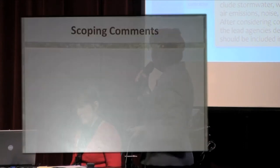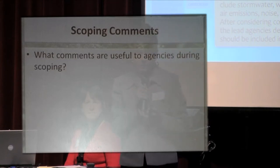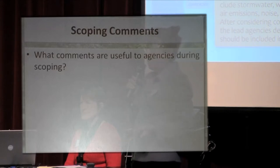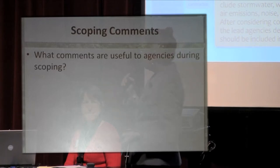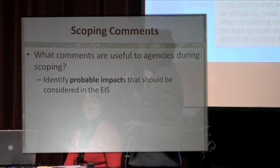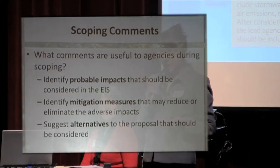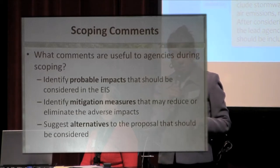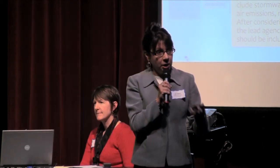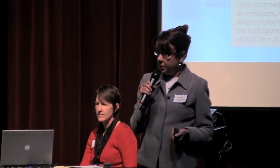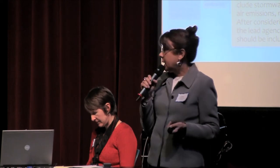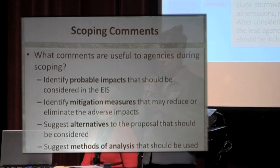What kinds of comments are useful to the agencies during scoping? You'll be looking at what came out in the DS and the core document. We need identification of probable impacts that should be considered in the EIS, what mitigation measures could reduce or eliminate adverse impacts, and suggestions of alternatives to the proposal that should be considered. We rely on you, the agencies, and the tribes to help expand upon that to produce an exceptional EIS — including suggesting methods of analysis that should be used. What should be analyzed and how should it be analyzed?